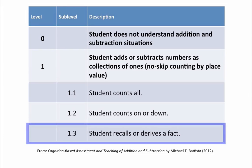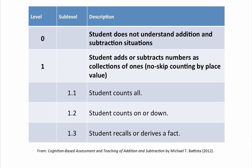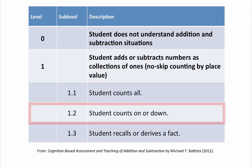This student is consistently at Level 1.3. He can recall facts from memory and derive facts from others. Students with a firm standing in Level 1.2 or above are ready to build fluency with Reflex because they show understanding that cardinal numbers represent actual numbers of objects. This abstraction shows they can begin learning to recall facts from memory and then build fluency.